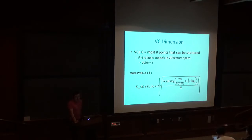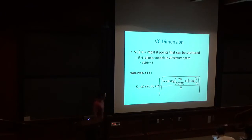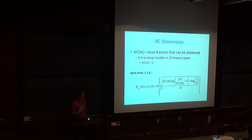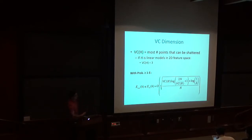These bounds are typically proven by Martingale analysis. A Martingale is a sequence of random variables whose expected value of the next variable, given observation of the previous one, equals the previous. If you write down the training data collection process as a Martingale process, you can apply things like the Azuma-Hoeffding inequality, and that's how we get these types of bounds.